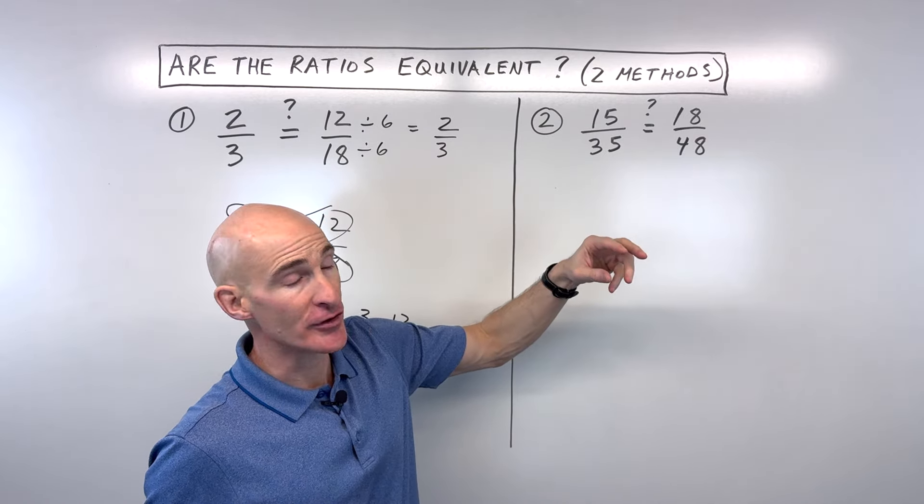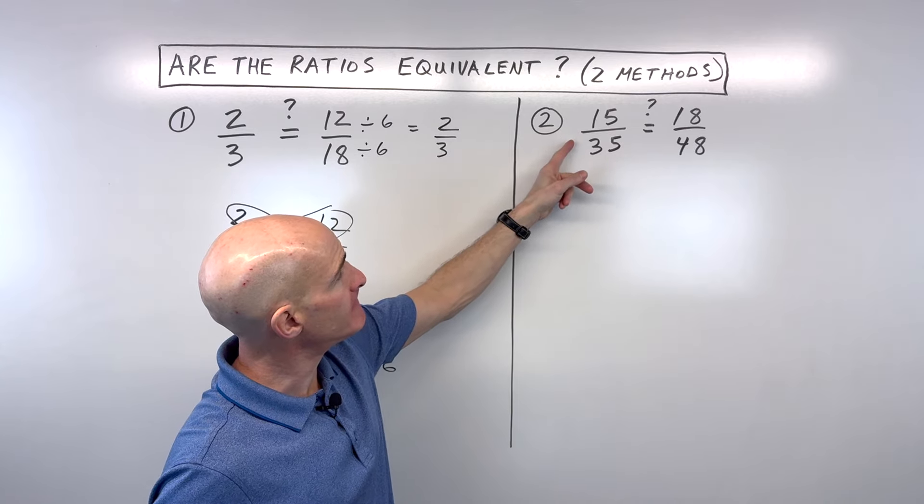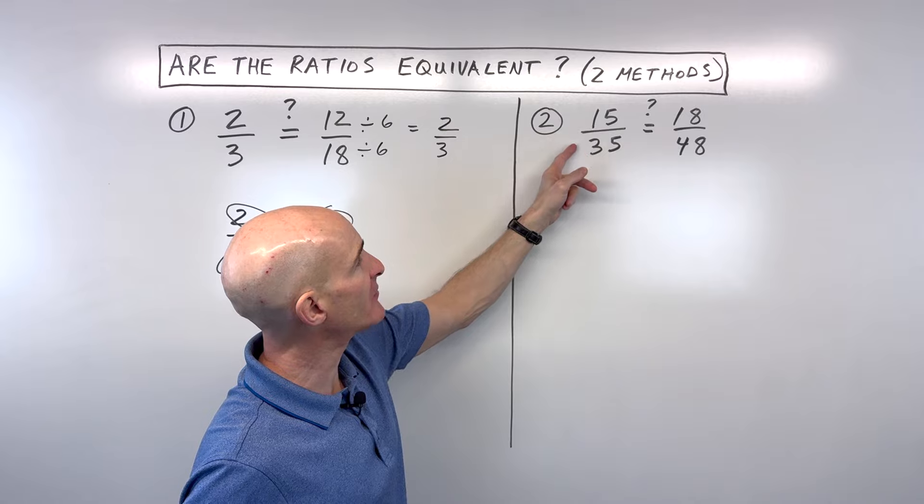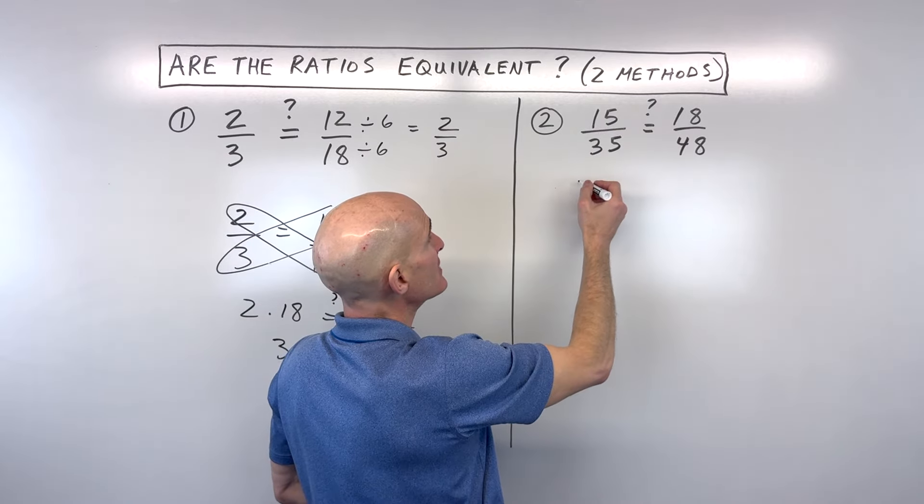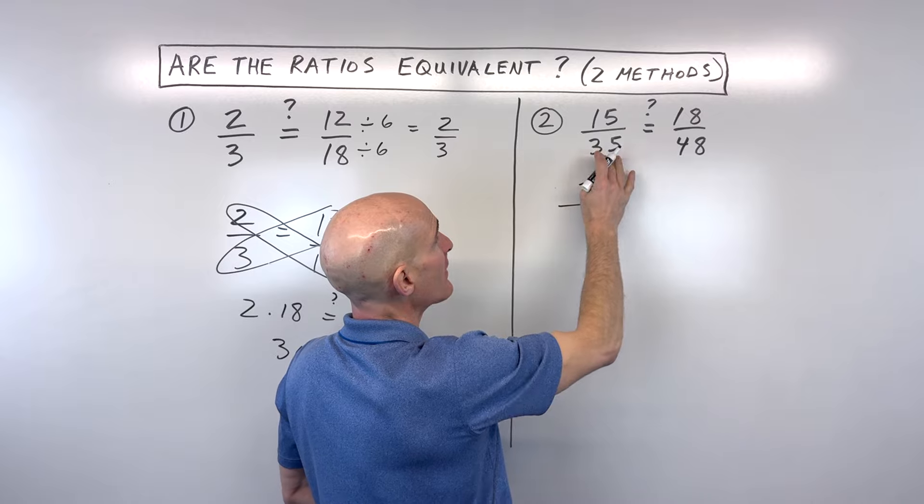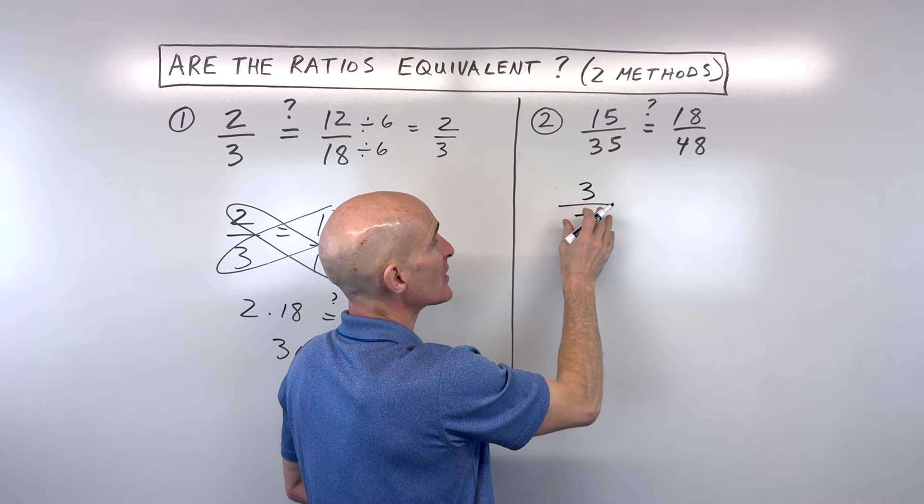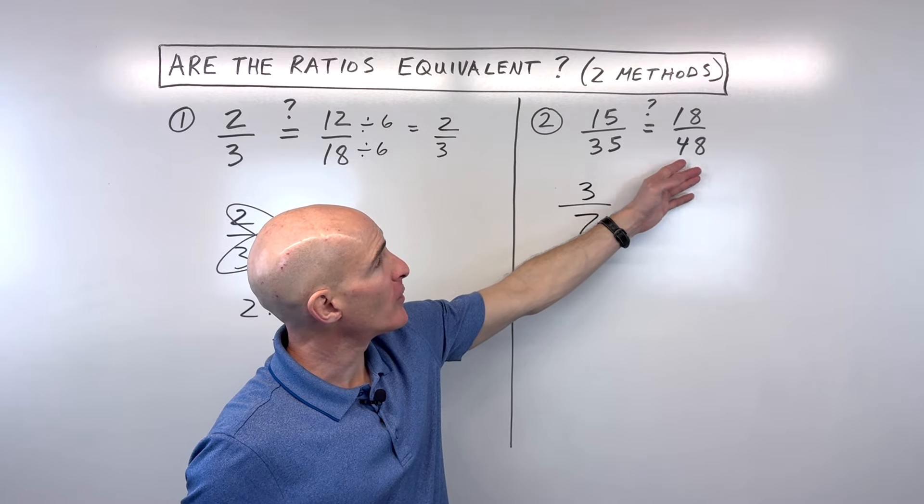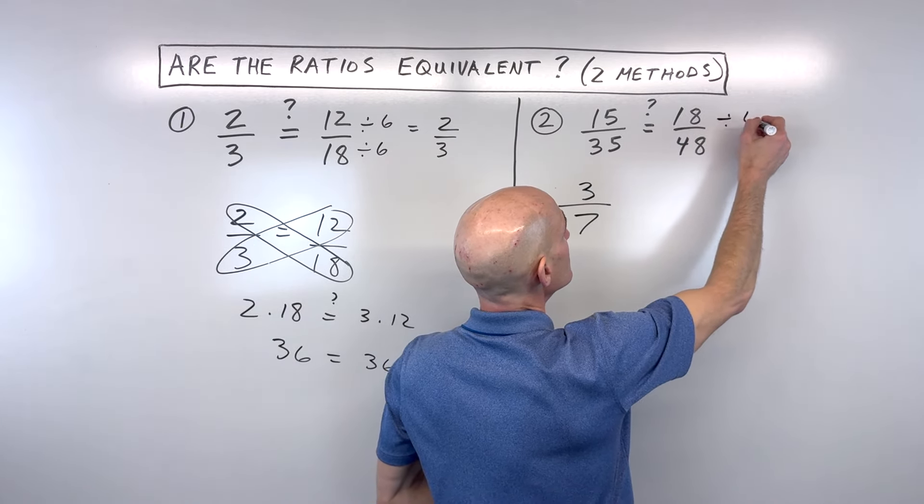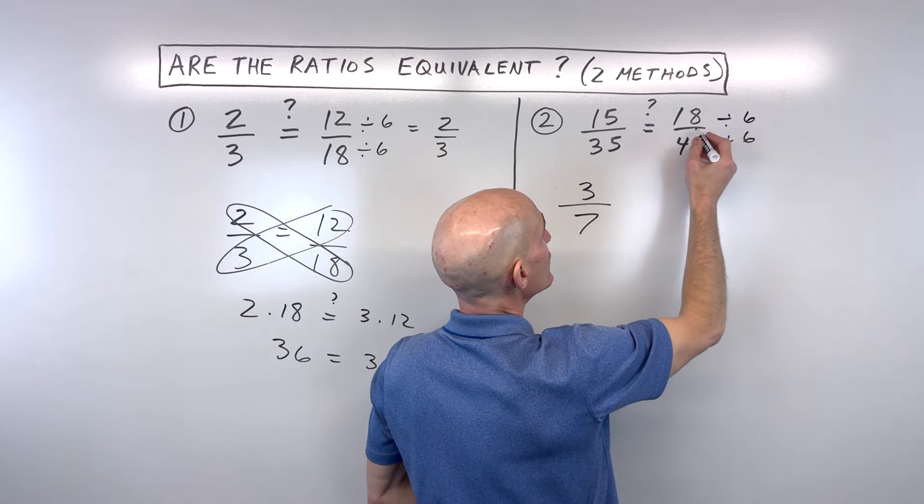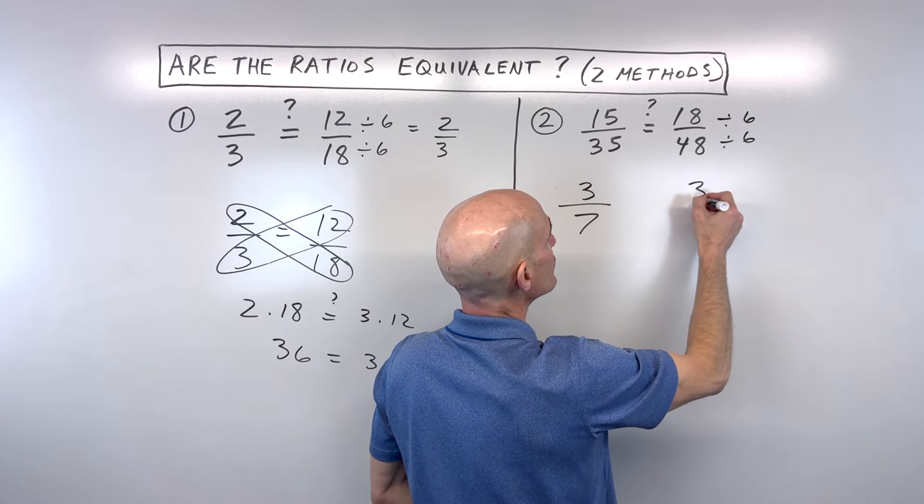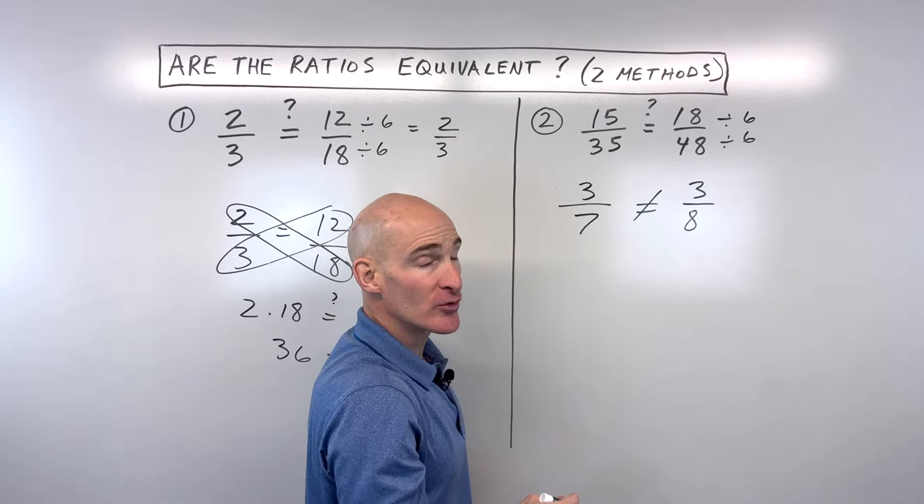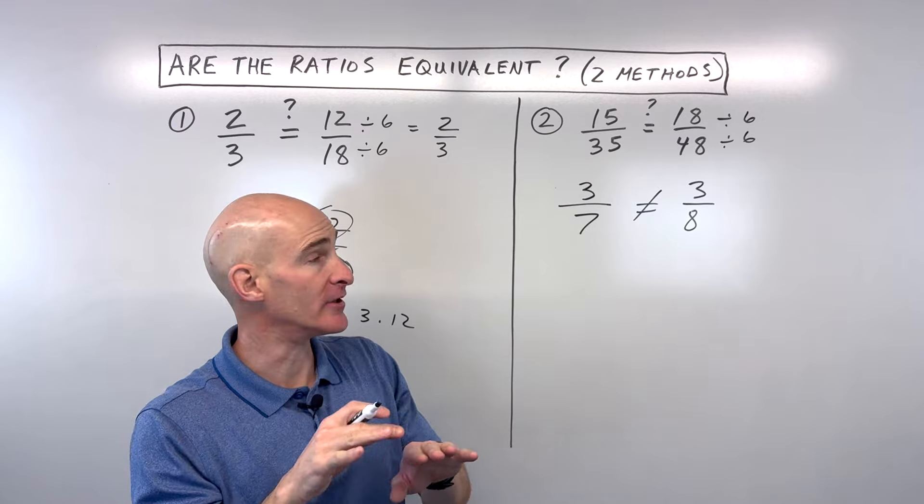Let's try the reducing method first. So here I can say, hmm, what can I divide both the numerator and denominator by? It looks like I can divide them both by five. So five goes into 15 three times, five goes into 35 seven times. Okay, we reduce the left side. How about this second ratio? Well, it looks like six goes into here, both numerator and denominator. 18 divided by six is three. 48 divided by six is eight. You can see these fractions are not equal to each other. These ratios are not equivalent, right?